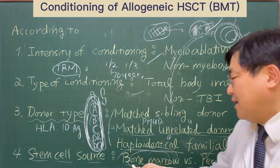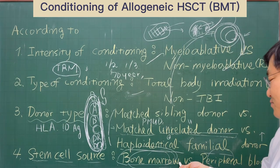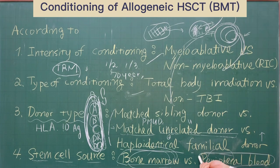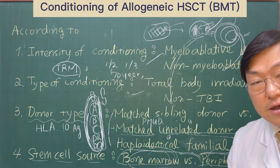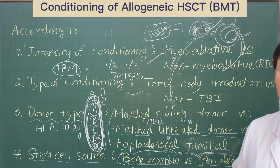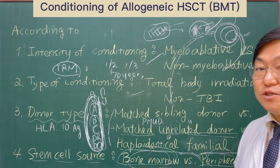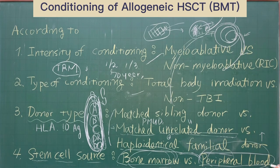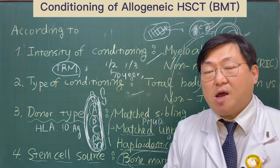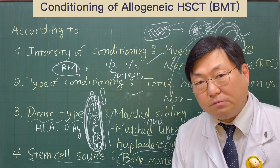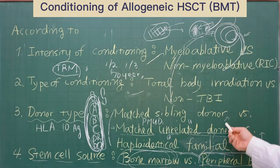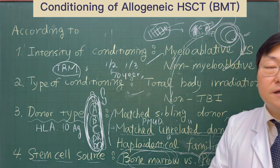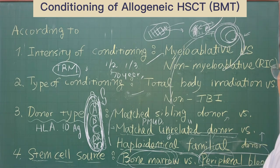When we compare stem cell transplantation outcomes between bone marrow stem cell transplantation and peripheral blood stem cell transplantation, these two kinds are almost comparable in terms of overall survival, treatment-related mortality, and GVHD incidence. Frankly speaking, the GVHD incidence is usually increased when we use peripheral blood stem cells. But for hematological malignancies such as acute leukemia, the GVHD increase is sometimes beneficial in that the relapse incidence is also decreased when the GVHD incidence is increased.